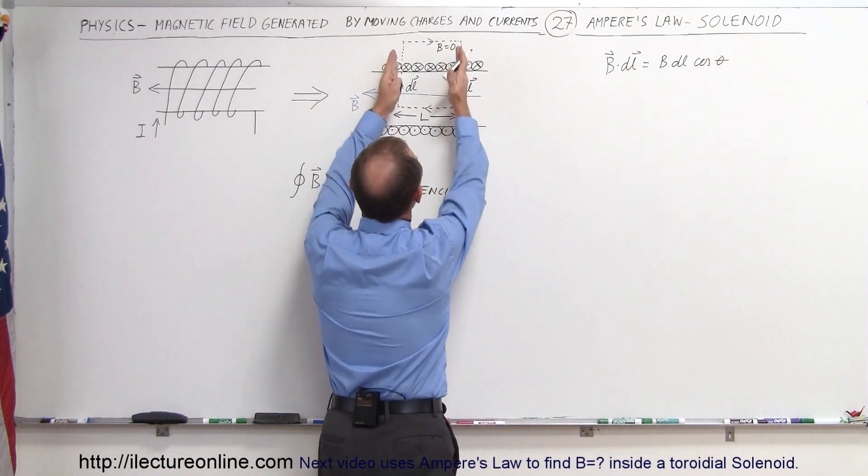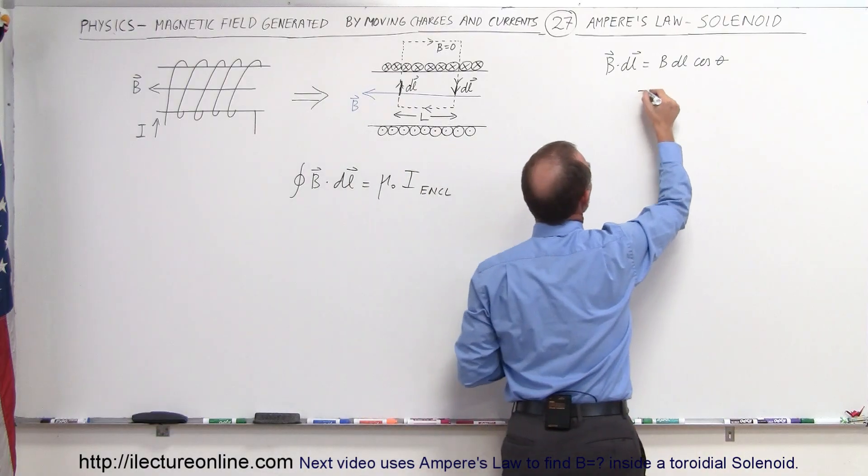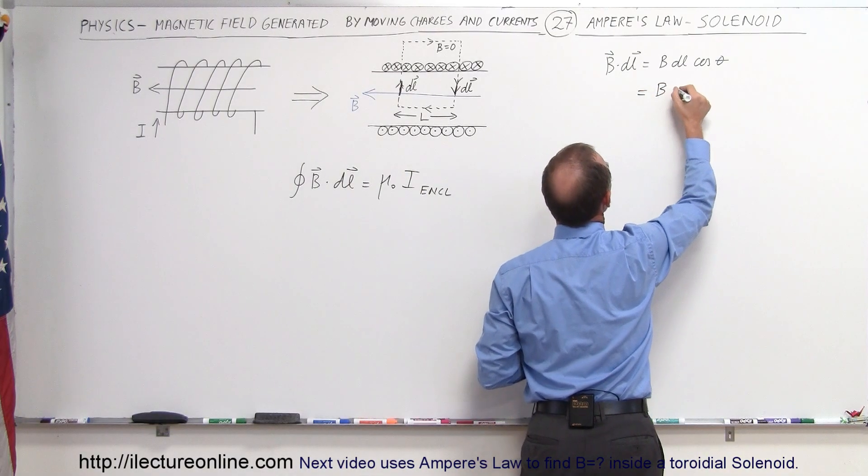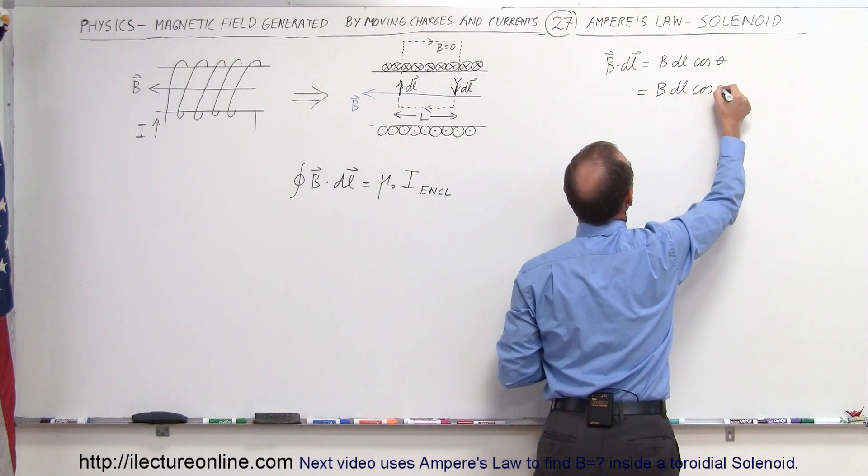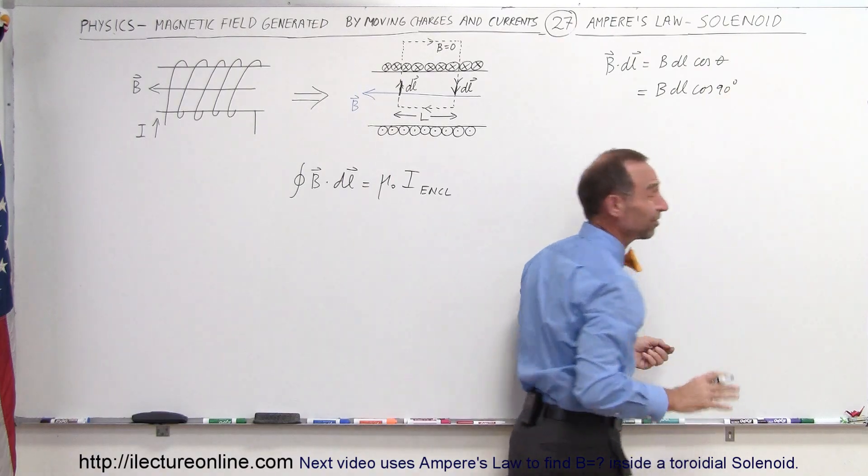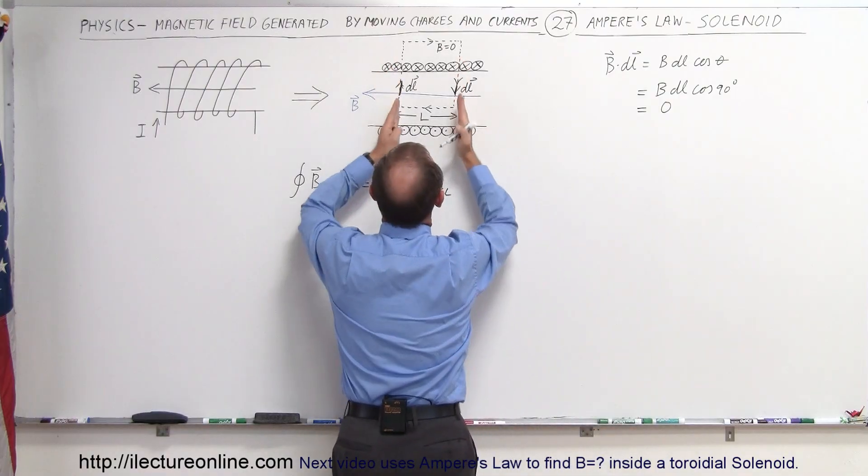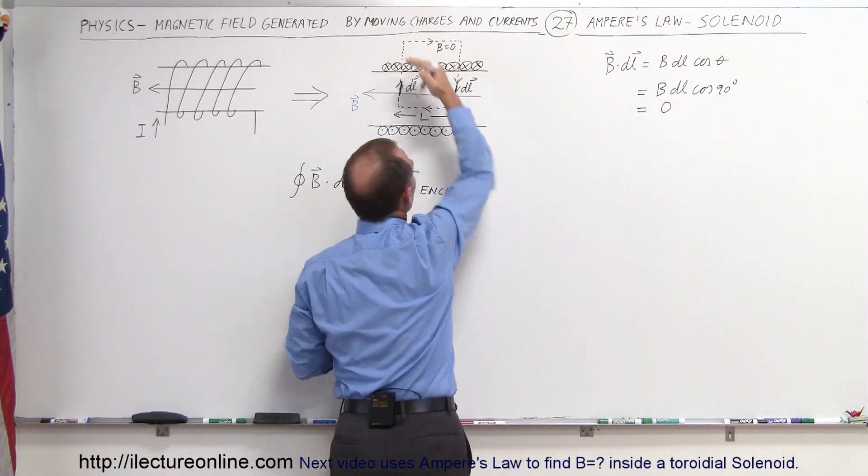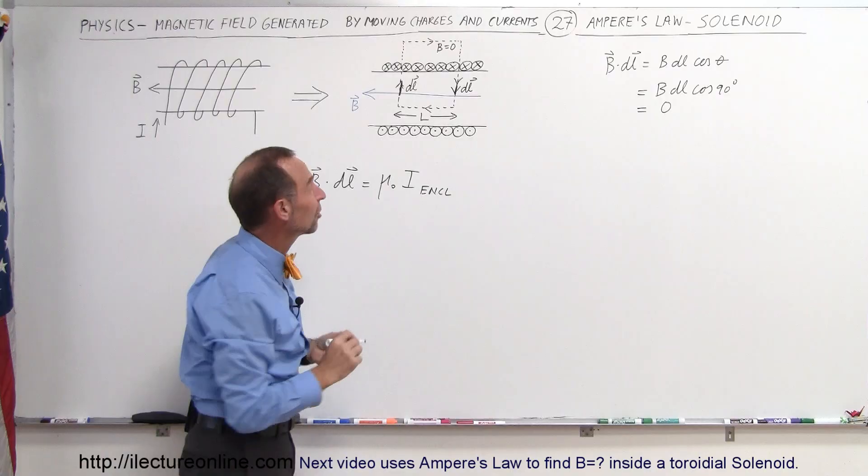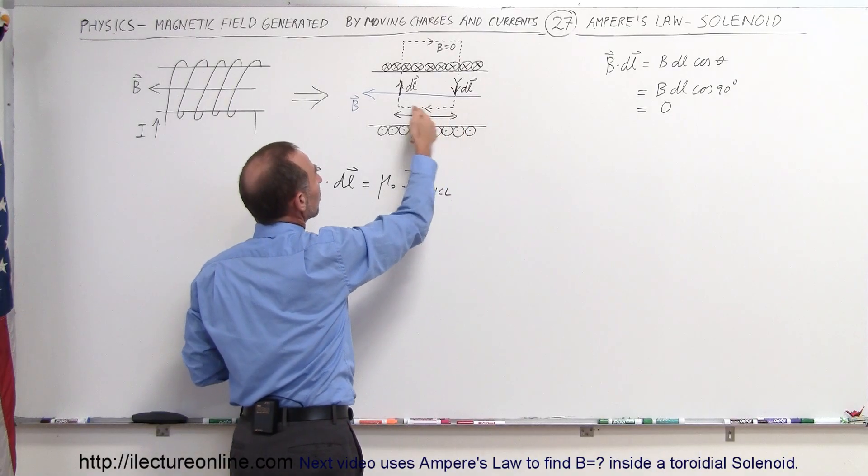And in this case, for the two side paths right there, we know that the angle is 90 degrees. So B times dL times the cosine of 90 degrees. And of course, the cosine of 90 degrees is zero. So therefore, this whole thing is equal to zero. So integrating over the sides, we get zero. Integrating at the top, we get zero. We only get a result when we integrate along the bottom.